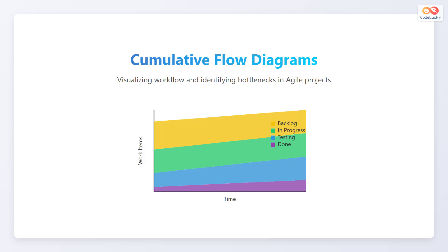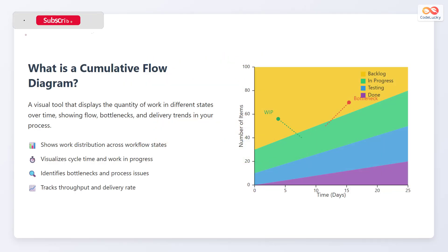Let's explore cumulative flow diagrams. These diagrams help in visualizing workflow and identifying bottlenecks in Agile projects. A cumulative flow diagram is a visual tool that displays the quantity of work in different states over time. It shows the flow, bottlenecks, and delivery trends in your process, work distribution across workflow states, cycle time and work in progress, and also identifies bottlenecks and process issues while tracking throughput and delivery rate.